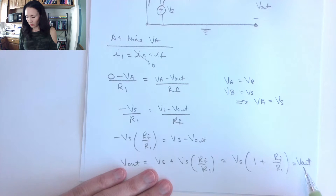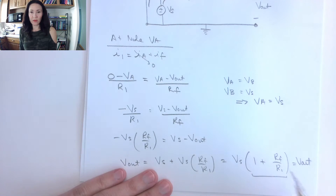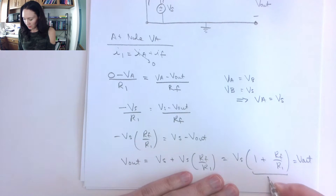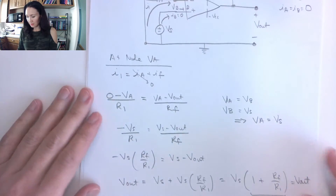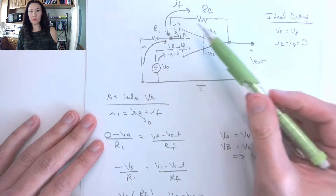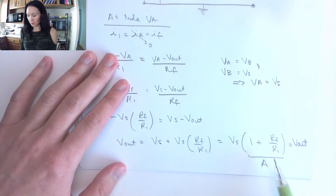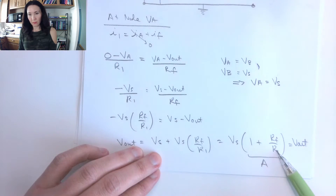This is our input voltage and this is our output voltage — so the constant multiplied by the input to give the output is the gain of the amplifier. As engineers, we get to determine the gain by choosing resistor values, because the gain equals 1 plus RF over R1.